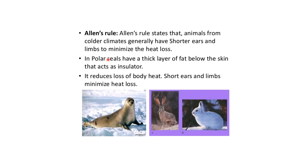According to Allen's Rule, animals from colder climates generally have shorter ears and limbs to minimize heat loss. Polar seals have a thick layer of fat below the skin that acts as an insulator, reducing loss of body heat. Short ears and limbs further minimize heat loss.